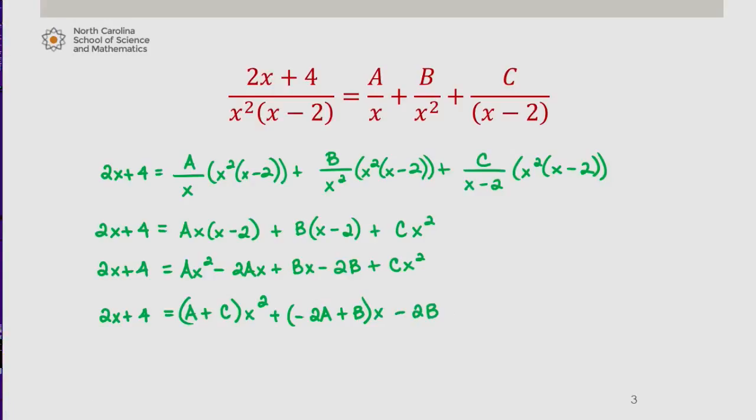Now in this case, we're going to use a little bit of a different method than we did in our previous example. We'll start as we did before. Let's let x equal 0. If x equals 0, this tells us that 4 on the left is equal to negative 2B.